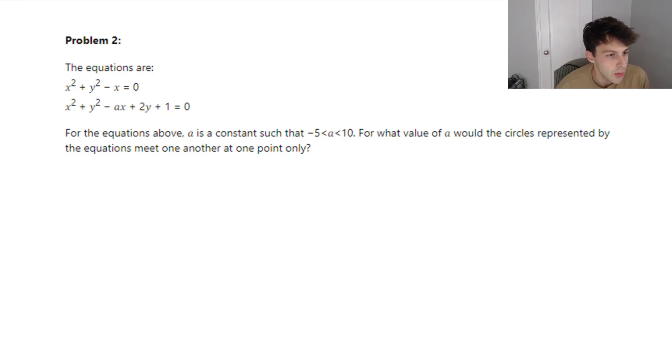It gives us these two equations, and we can see that there are equations of a circle. It tells us that in the next part of the question. But it also has this constant a thrown in the mix there, and it says that it's between negative 5 and 10. And it asks us, for what value of a would the circles represented by the equations meet one another at only one point?